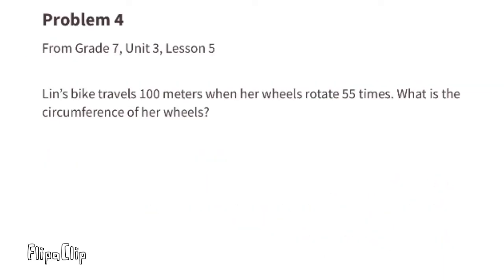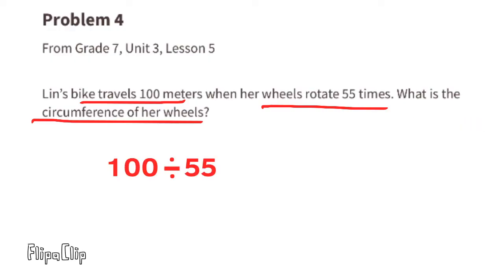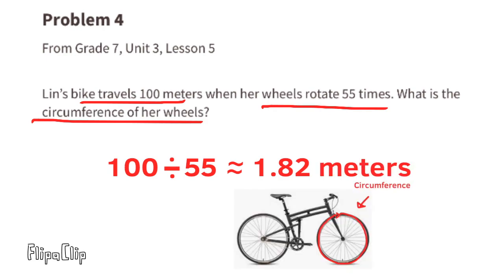Problem number four, from 7th grade Unit 3 Lesson 5: Lynn's bike travels 100 meters when her wheels rotate 55 times. What is the circumference of her wheels? 100 meters divided by 55 rotations equals approximately 1.82 meters, so the circumference of her wheels is approximately 1.82 meters.